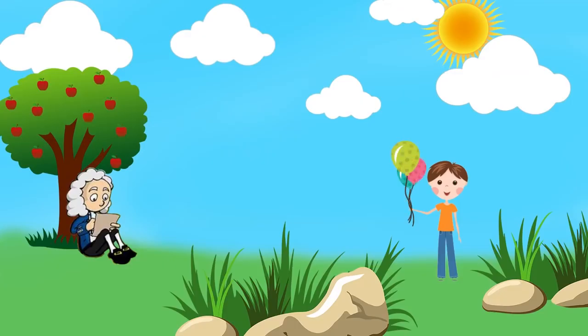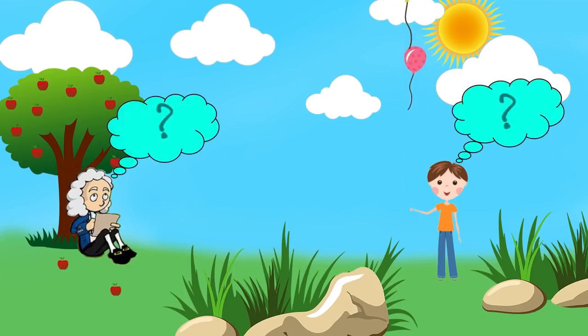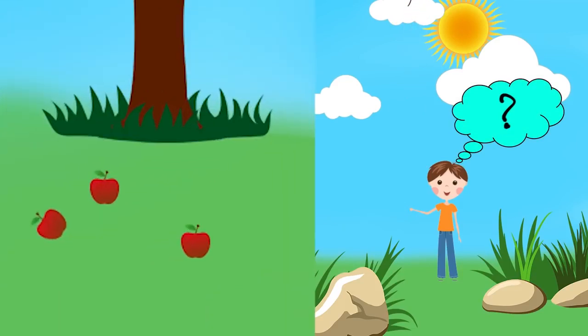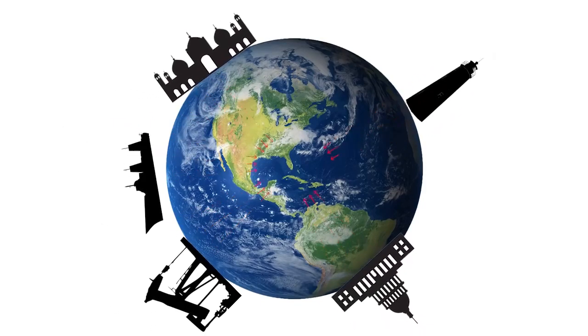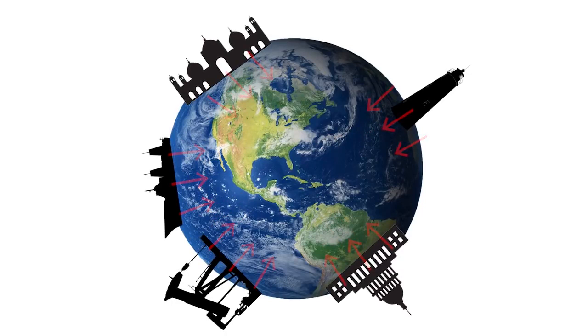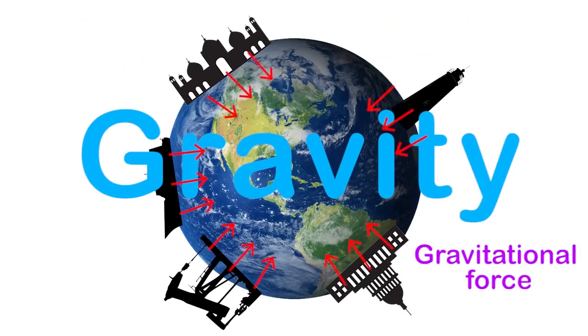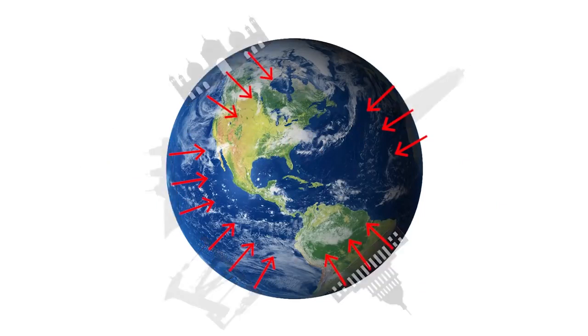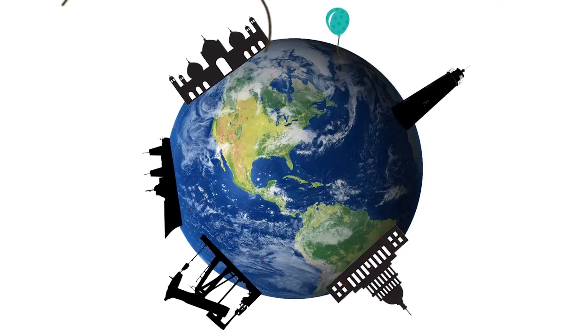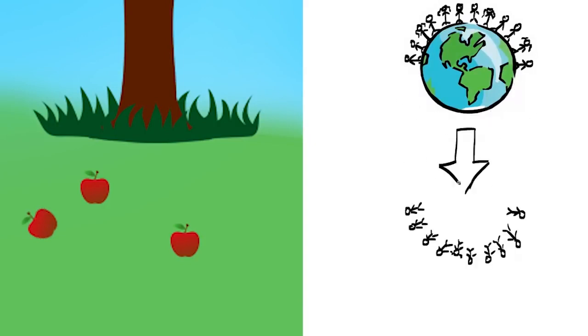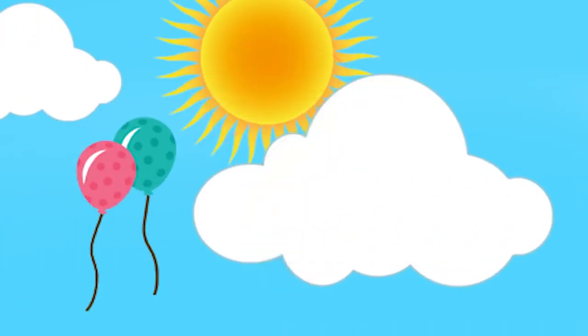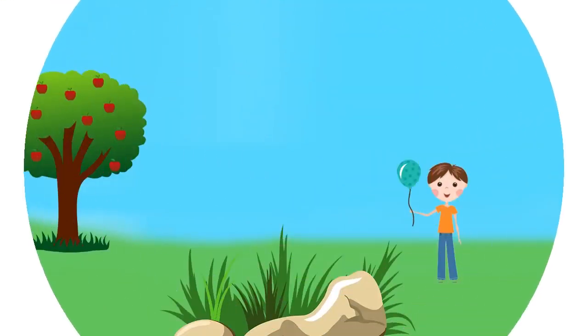We have all observed apples falling from a tree or balloons floating away in air. How is this possible? The apples fall down while the balloons float up? This is nothing to be puzzled about. The answer is simple. Our earth has a kind of a pull that draws every object to its surface. This pull is called gravity or gravitational force, which keeps every object grounded to the surface of the earth and prevents them from floating away.